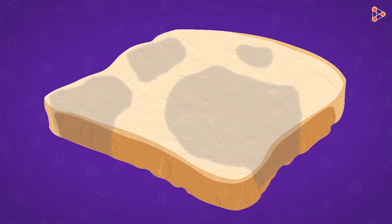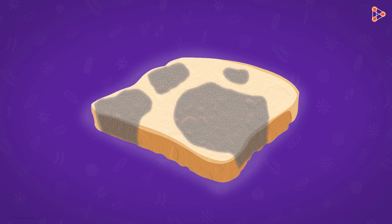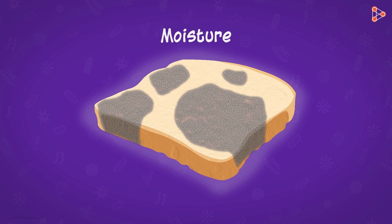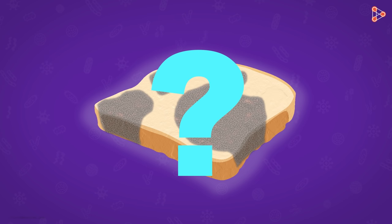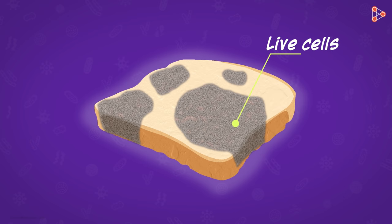We all have noticed the cottony growth on a stale piece of leftover bread. It happens with many food items when they are left open, especially in moisture. But have you ever wondered why? What exactly gets this cotton-like substance here? What is it made up of? Well, the cottony growth is nothing but a set of living cells.